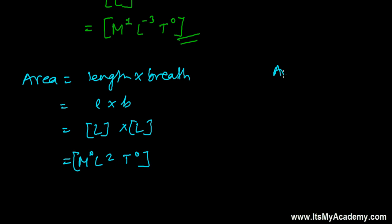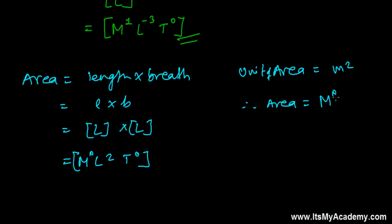And if you go by the unit method, then the unit of area is meter square. Therefore the dimensional formula of area is: kg is zero, so M⁰; meter means length is squared, so L²; and second is zero, so T⁰. That's the dimensional formula of area.